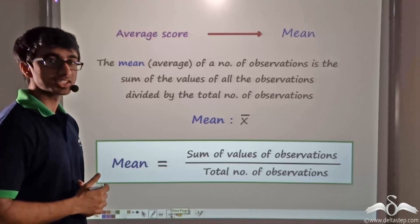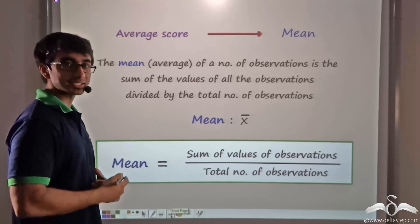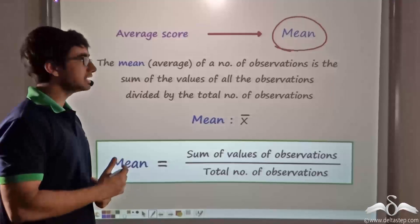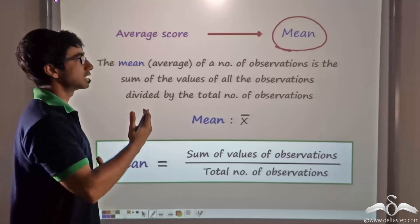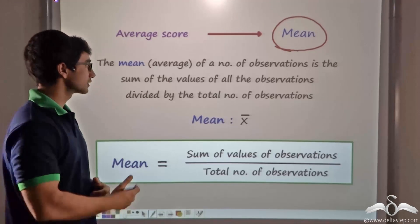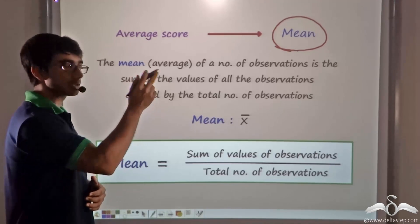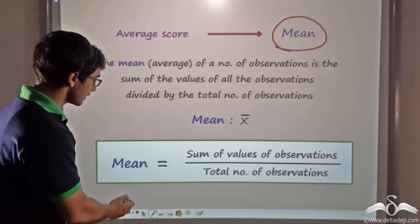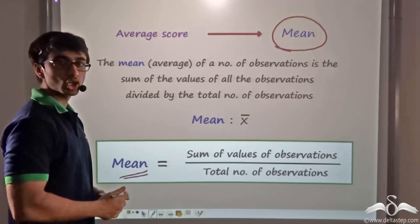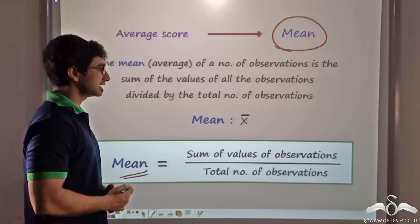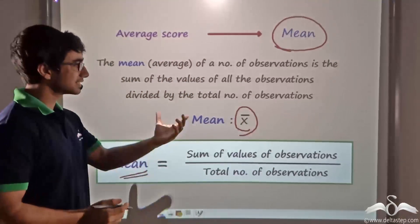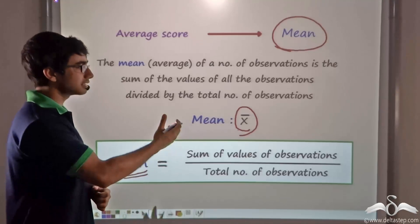Now what have we studied about average? The average of any particular data set is also known as the mean. The mean or the average of a number of observations or a data set is the sum of the values of all observations divided by the total number of observations. Mathematically, mean is given as sum of values of observations divided by the total number of observations. Mean is usually represented as x with a bar at the top, read as x bar.